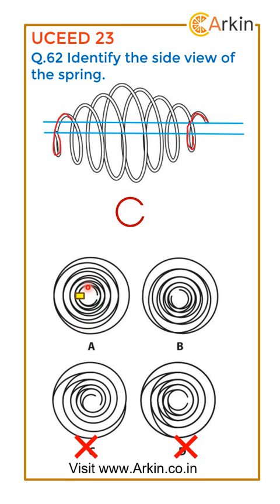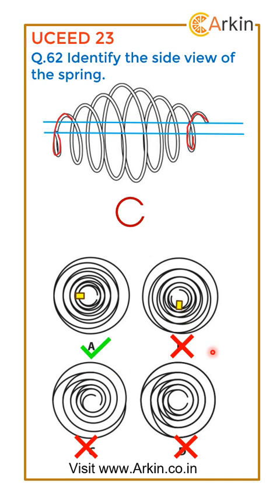From this side, it will be turning in the middle only. Whereas in option B, it is turning such that one part is bigger and the other part is smaller, which is not correct. So that's why A will be correct and B will be wrong.